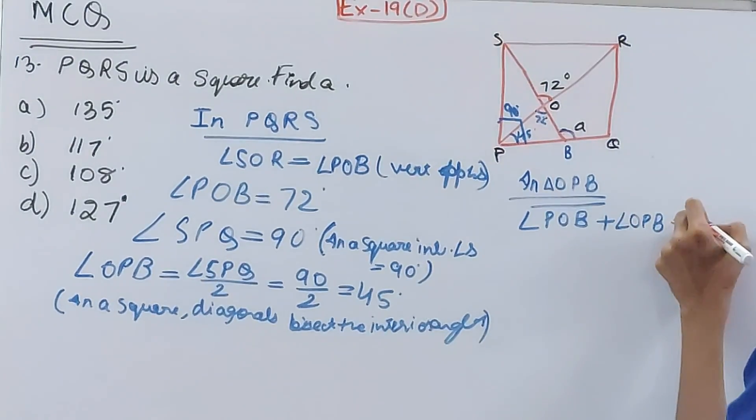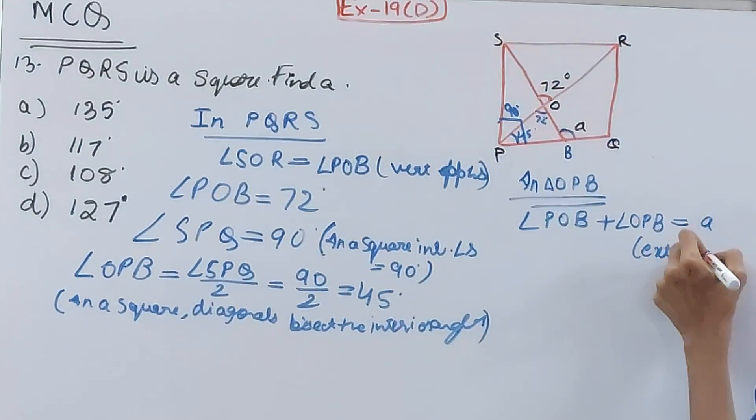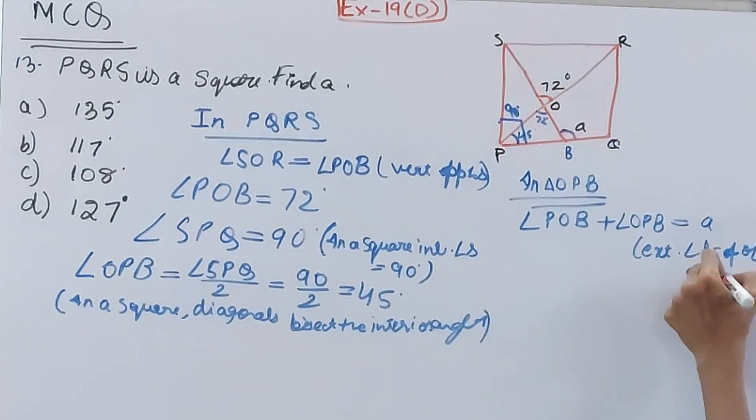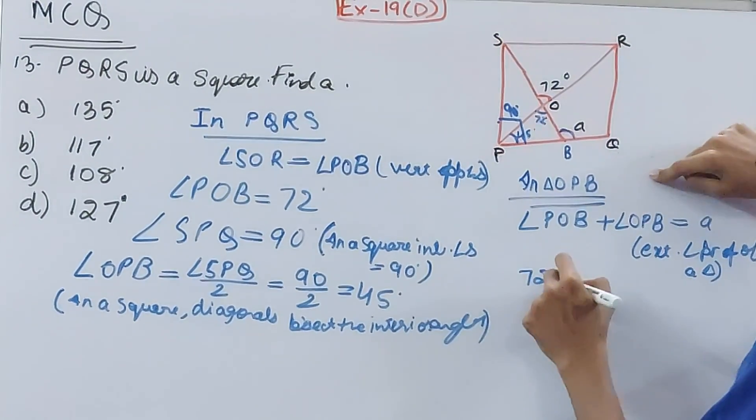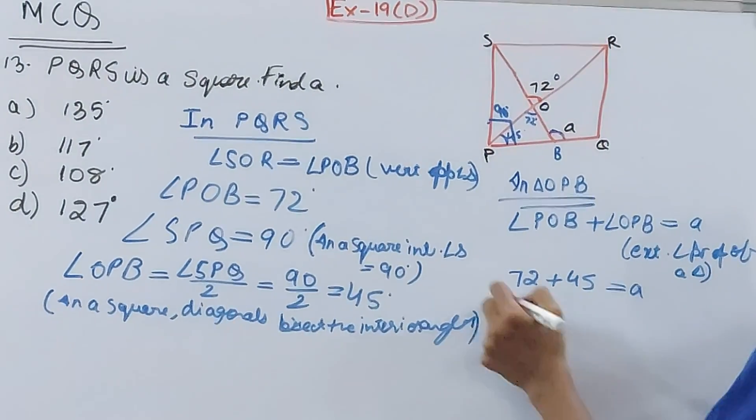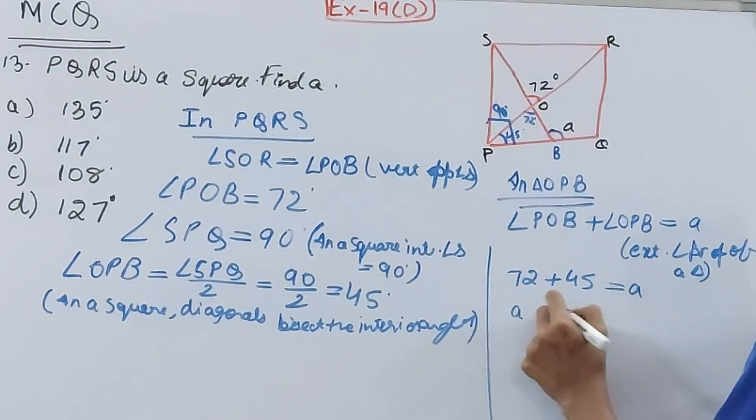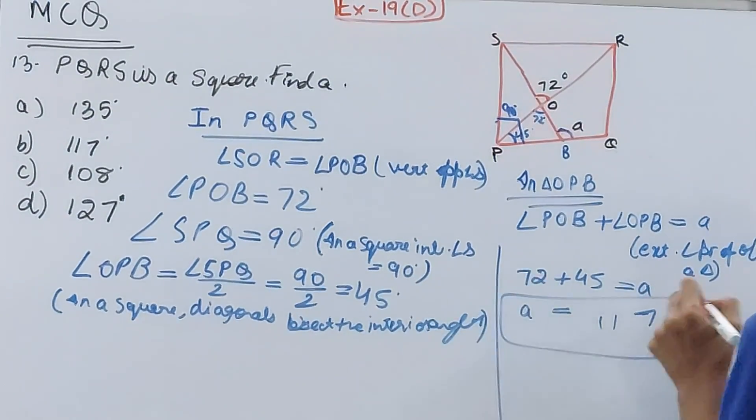What property? Exterior angle property of a triangle. Yes. So POB is 72 degrees plus OPB is 45 degrees, that will be equal to a. So finally, the value of a will be 117 degrees.